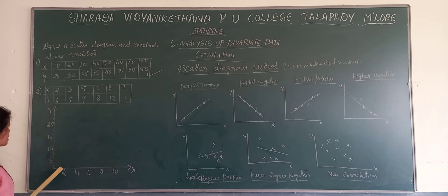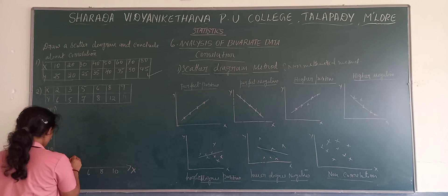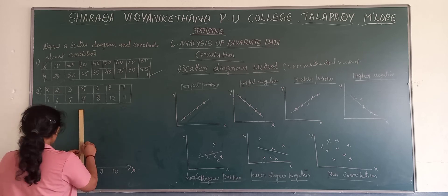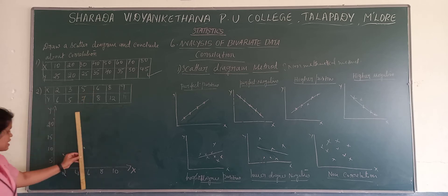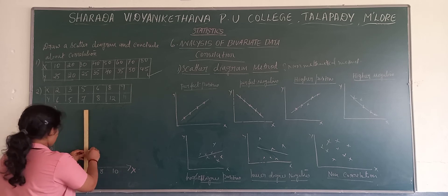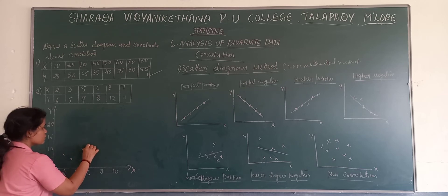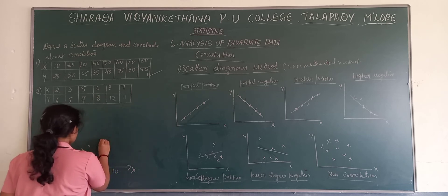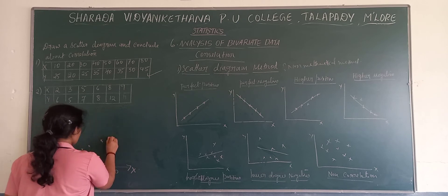We mark the values: x = 2, y = 6; x = 3, y = 5; x = 5, y = 7; x = 6, y = 8; x = 8, y = 2; x = 9, y = 11. So here also, if we are drawing the line, we get a wider line.